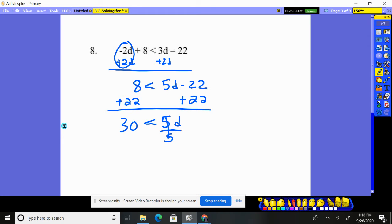Now divide by 5. I get 6 < d. In other words, d - remember the alligator's eating d - so if I want to rewrite this, I could put d first.